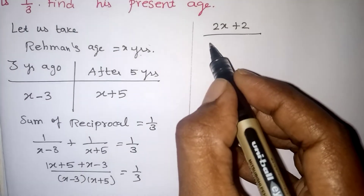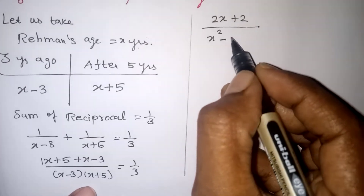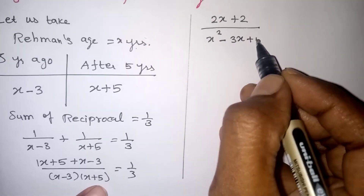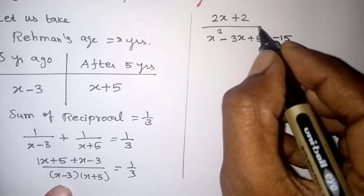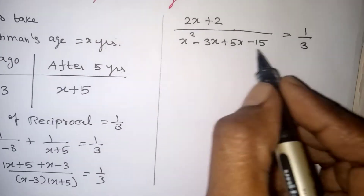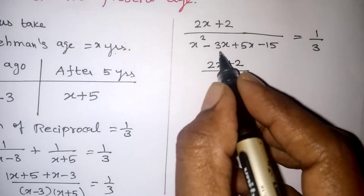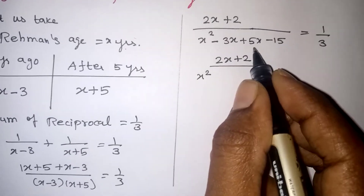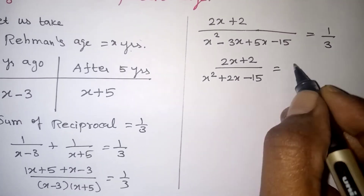Expanding the denominator: X into X gives X squared, minus 3 into X gives minus 3X, plus 5 into X gives 5X, and 5 times 3 gives minus 15. So the numerator becomes 2X plus 2, and the denominator is X squared plus 2X minus 15, all equal to 1 by 3.